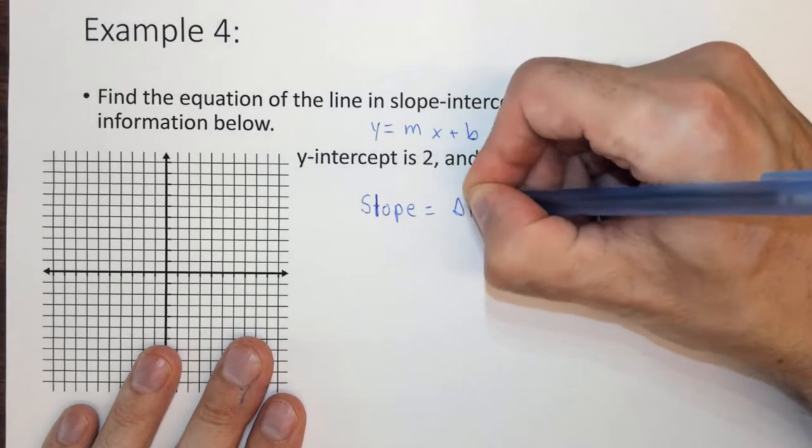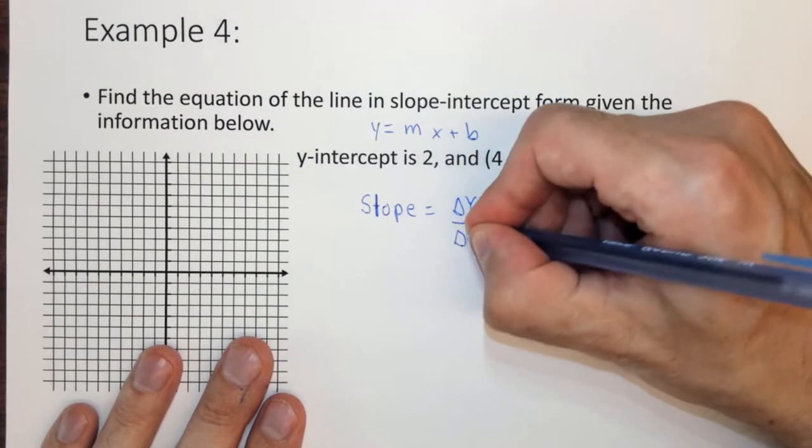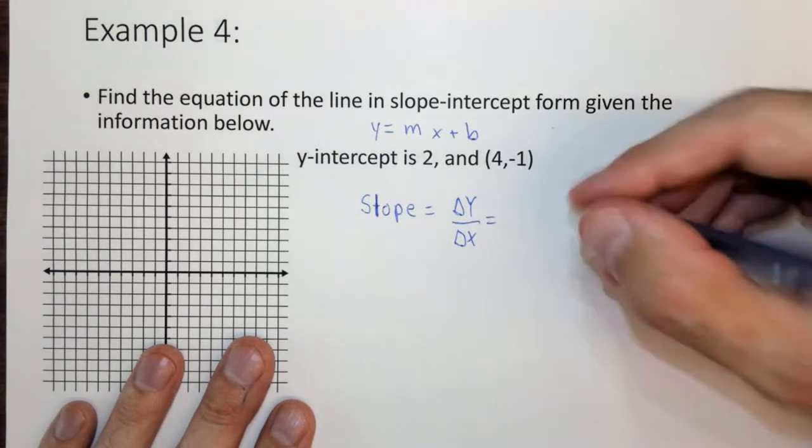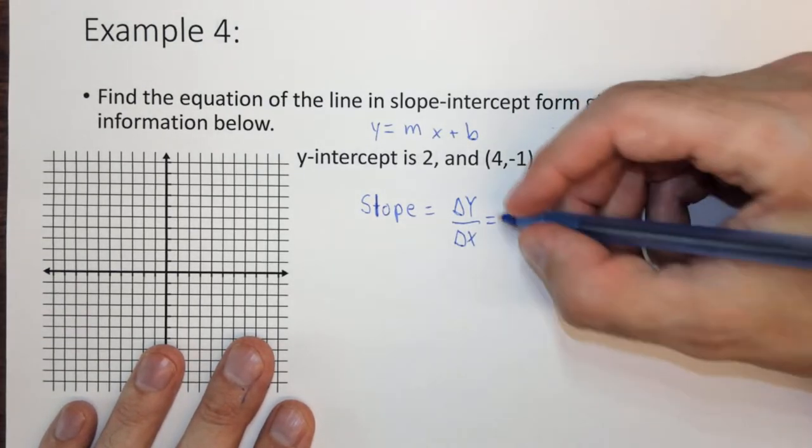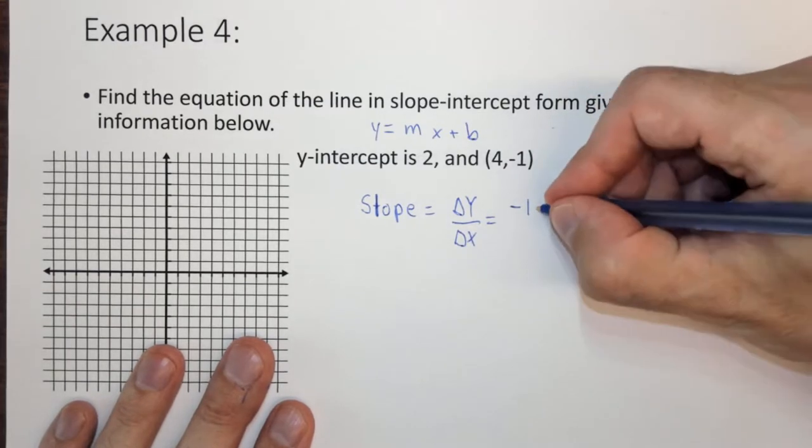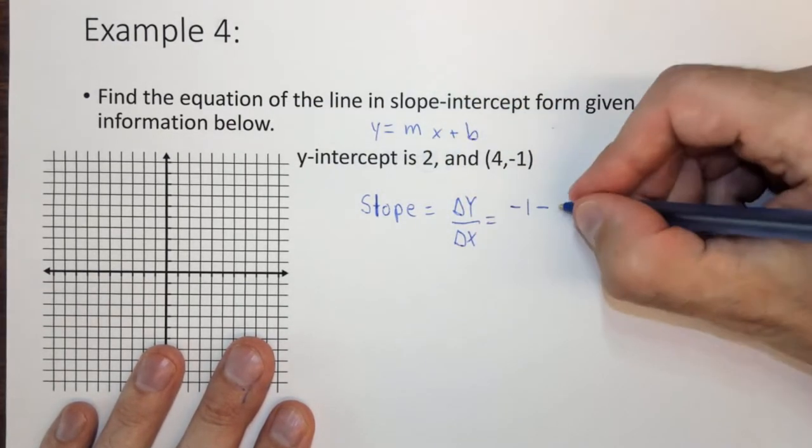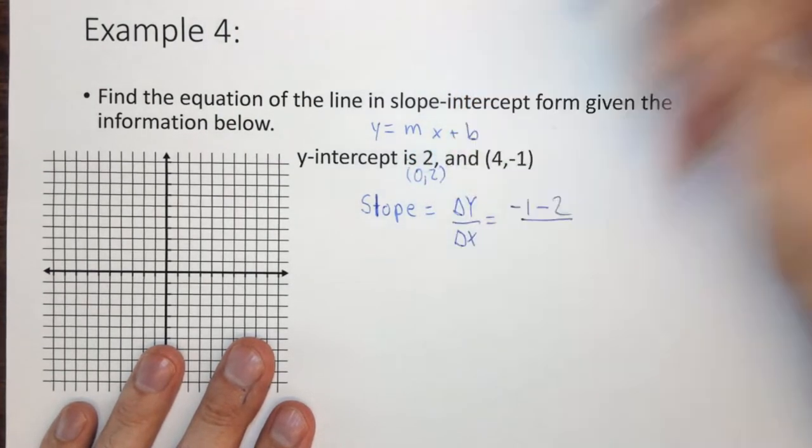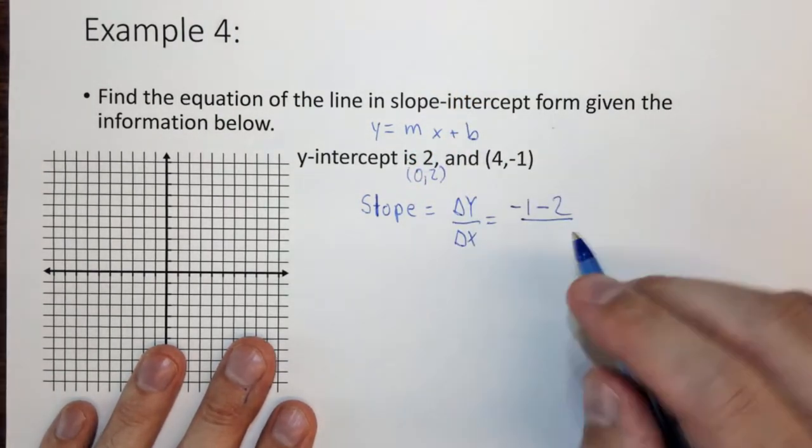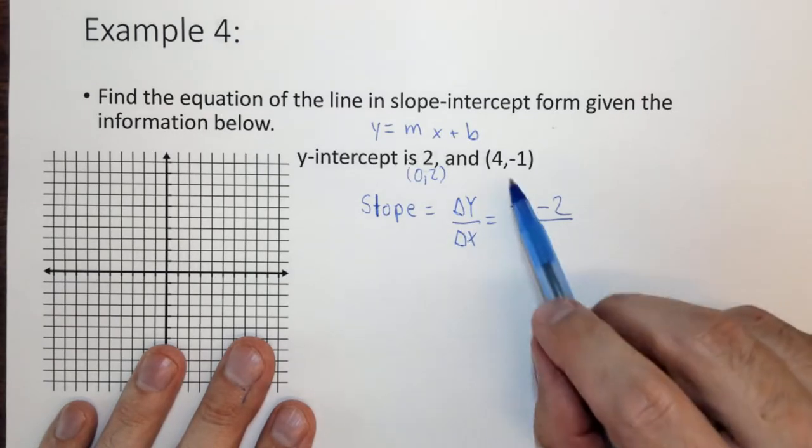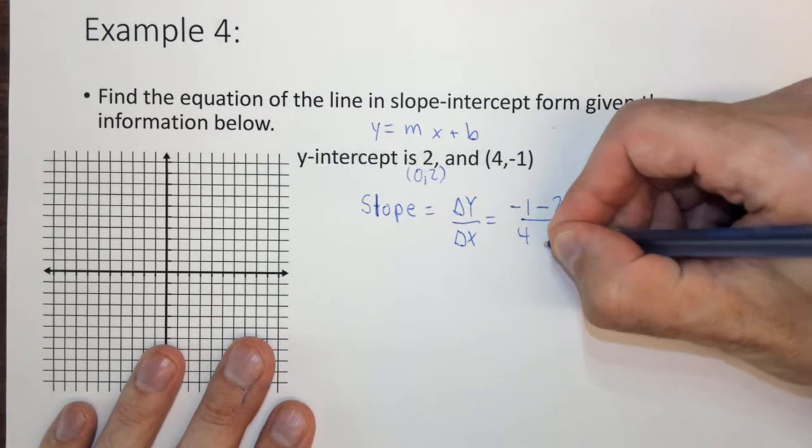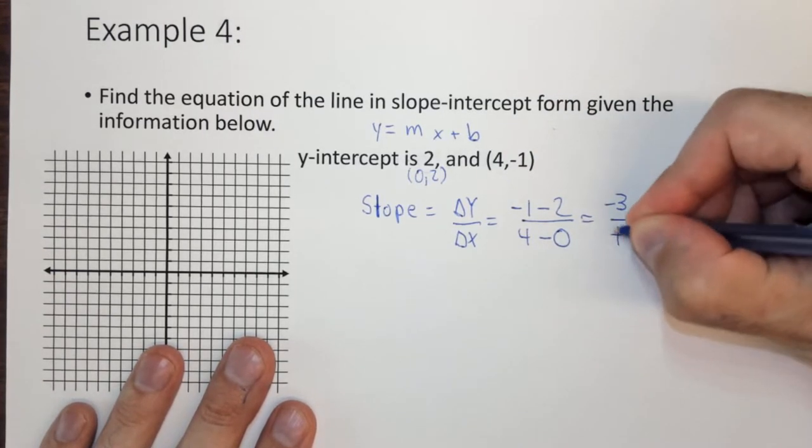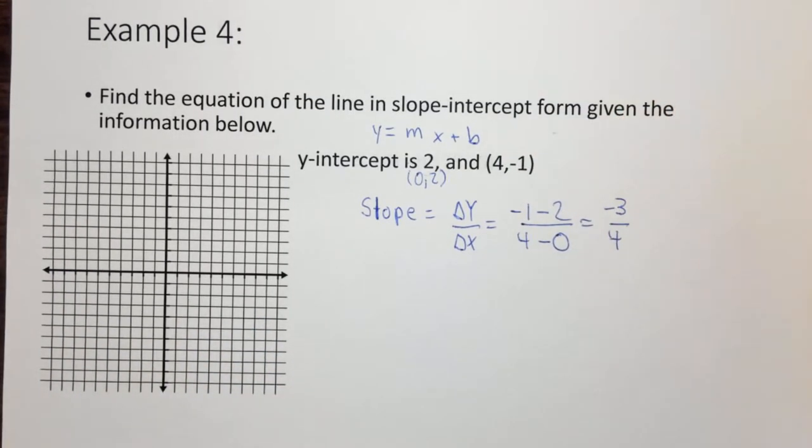equals delta y over delta x, where delta y is y2 minus y1. So let's take the y's. The y that we know are minus 1 minus 2, because this is 0, 2. That's what the y-intercept means. So the x's are 4 minus 0. So we have negative 3 over 4 as the slope of this line.